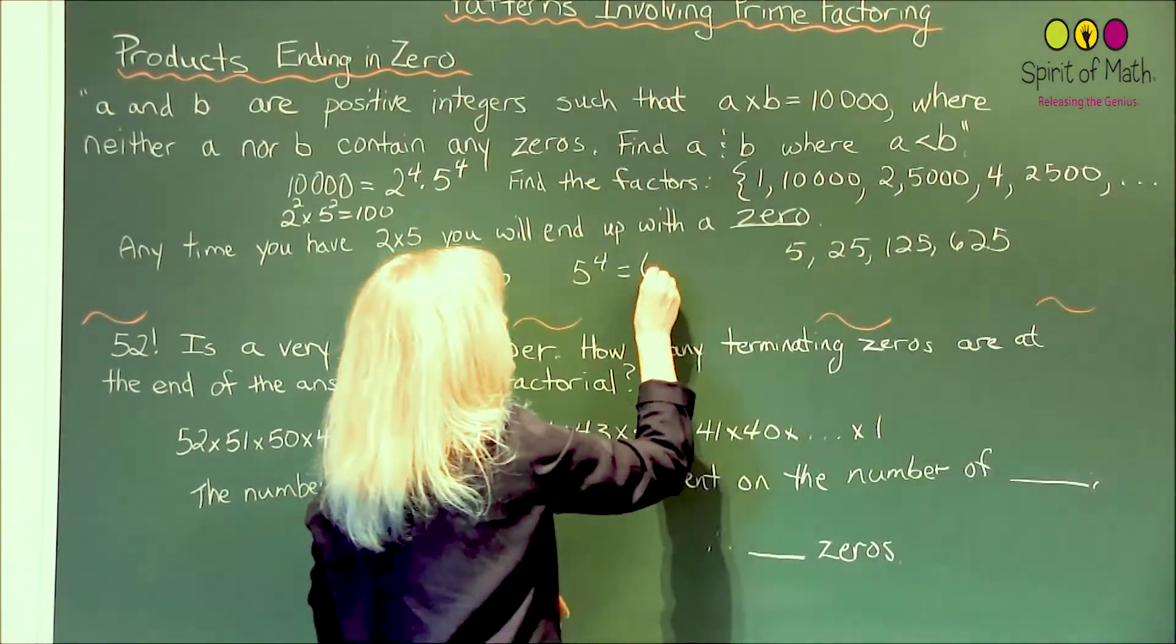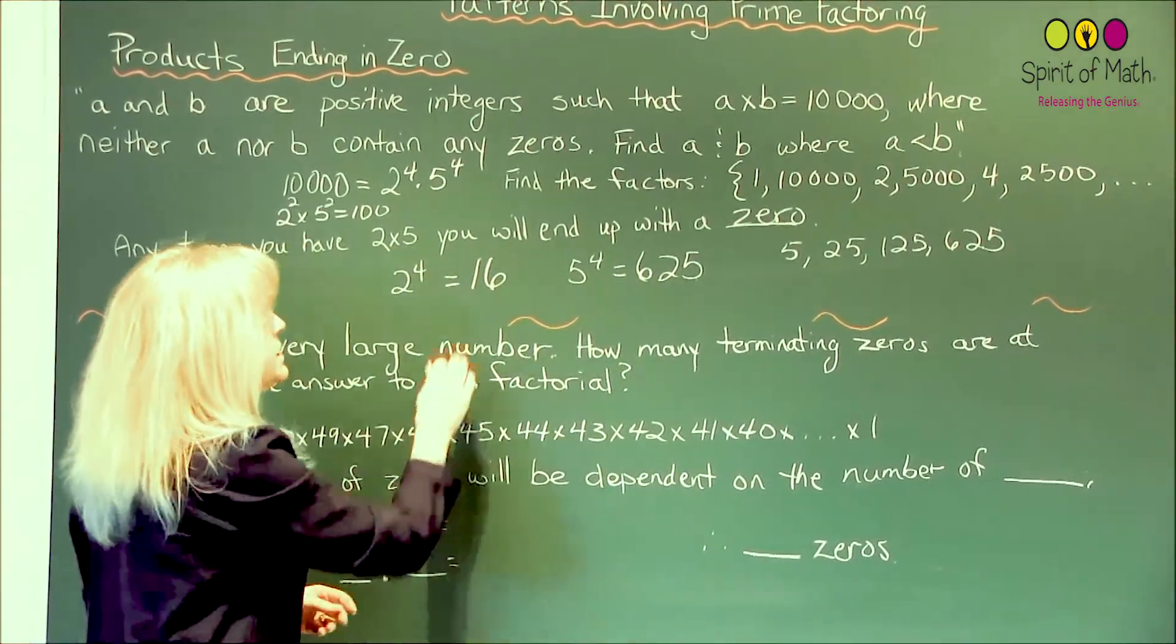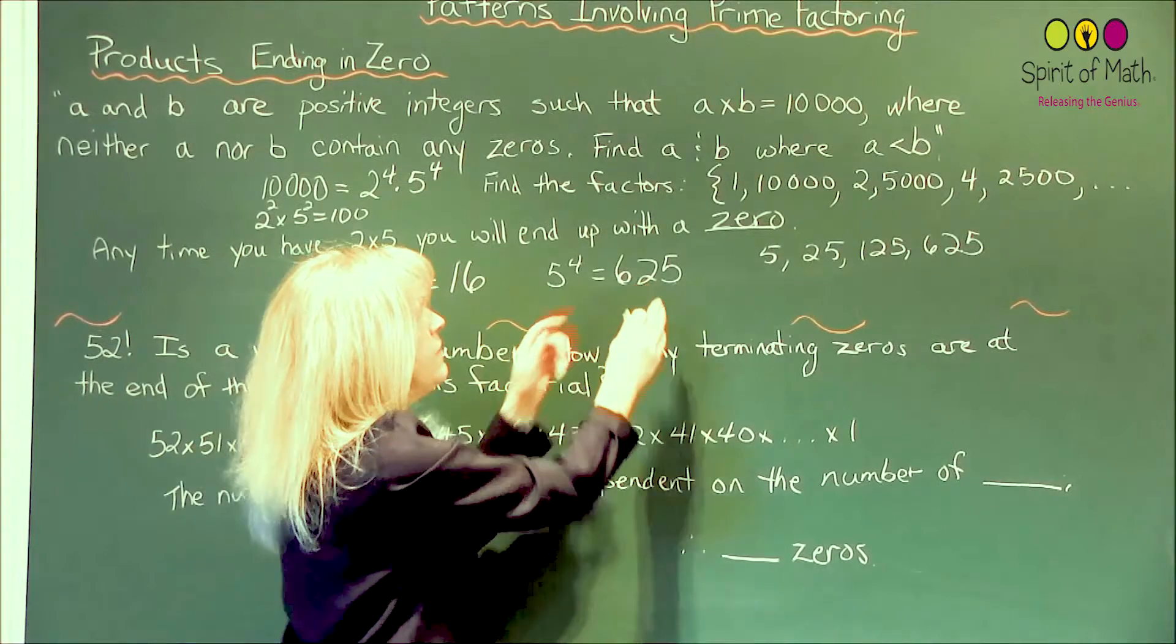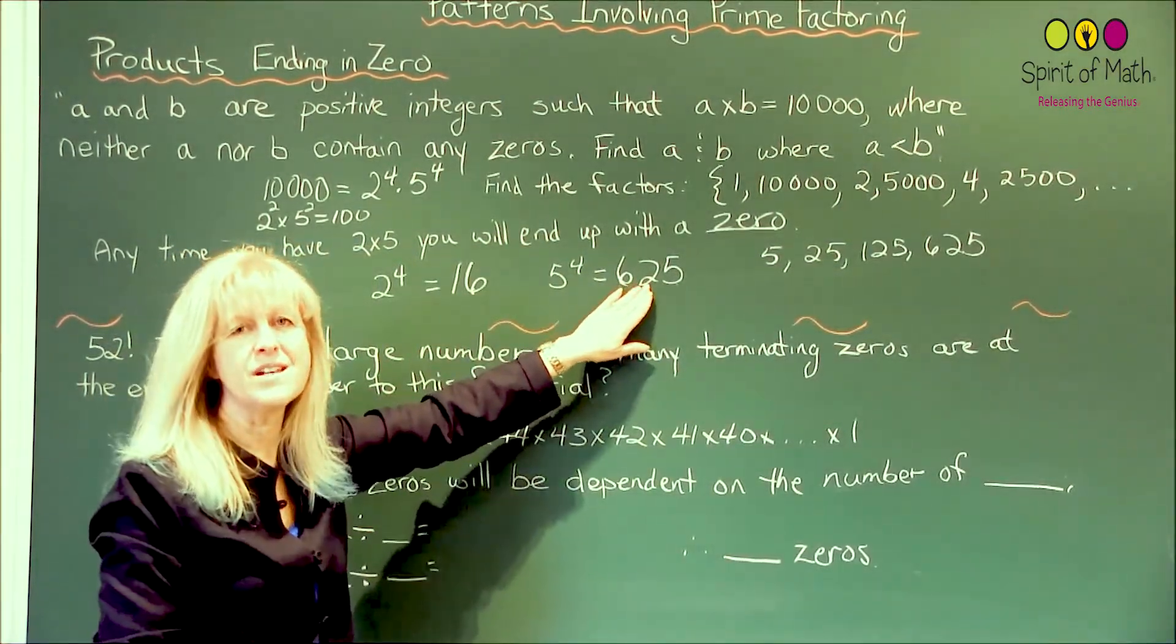That's 1, 2, 3, 4. So the numbers, therefore, are 16 and 625. A has to be less than B, so A is 16 and B is 625.